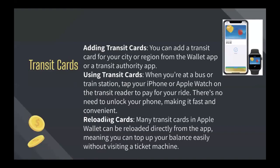For transit cards, adding them is quite simple — you can add for your city or region from the wallet app or a transit authority app. When at the bus or train station, just tap your iPhone or Apple Watch on the transit reader to pay for your ride. There's no need to unlock your phone, which makes it faster and more convenient. Many transit cards in Apple Wallet can also be reloaded directly from the app, so you can top up your balance without visiting a ticket machine.